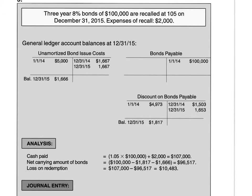Now we're ready to address another common issue with bonds: when bonds are recalled. There might be several reasons for doing that. One very popular one is simply that interest rates changed and we can save money if we were to refinance the bonds — basically call high interest bonds back and issue new debt with interest rates much lower than the original ones.